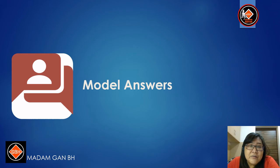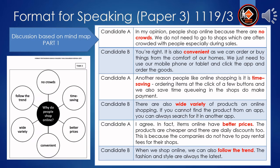On the next slide, you will look at the model answer. For Part 3, the first part is discussion and the second part is choosing the best. Candidate A: In my opinion, people shop online because there are no crowds. We do not need to go to shops which are often crowded especially during sales. Candidate B: You're right. It is also convenient as we can order or buy things from the comfort of our homes — we just need a mobile phone or tablet to click the app and order goods. Candidate A: Another reason people like online shopping is it is time-saving. Ordering items with a click of a few buttons saves time queuing in shops to make payment.